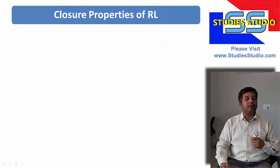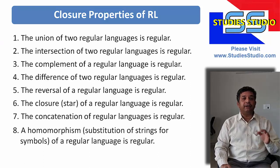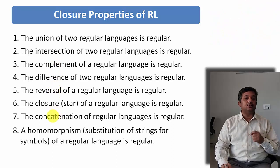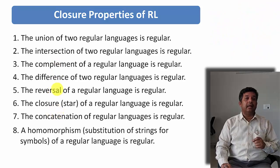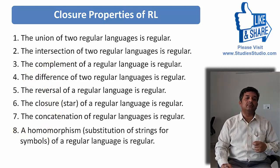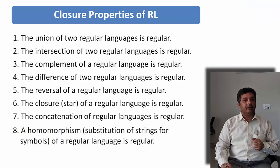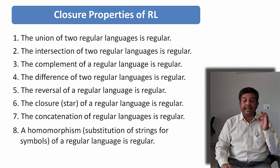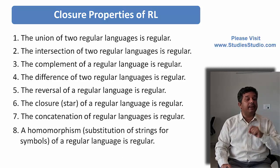Let us try to learn the closure properties of regular languages. If I take two regular languages, then the union of those two languages, the intersection of those two languages, the difference of those two languages, and the concatenation of those two languages will be regular. Apart from that, complement, reversal, closure, and homomorphism are also regular. The proof of these properties is available in any book — we are not going to discuss the proof here. In this video, we are going to take examples and try to make you understand what is the meaning of each.